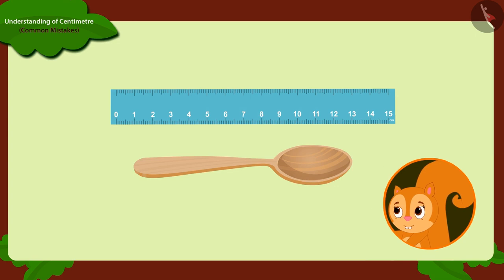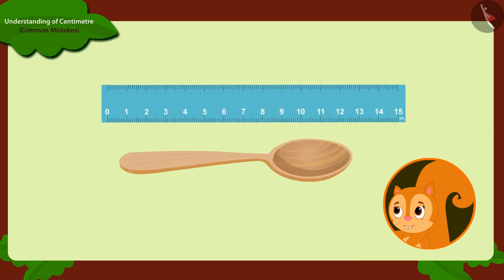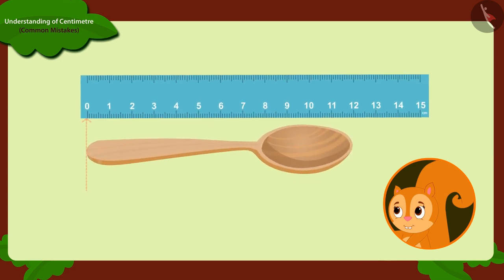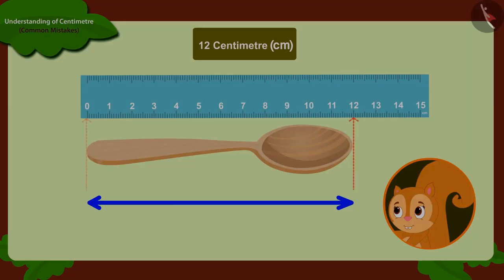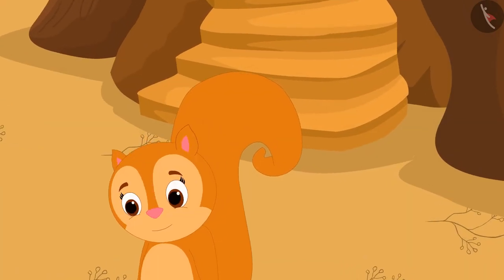Chanda realized her mistake and measured the spoon from number zero. And this time she got the length of the spoon exactly 12 centimeters as before. Now Chanda wants to get a skirt made for herself.